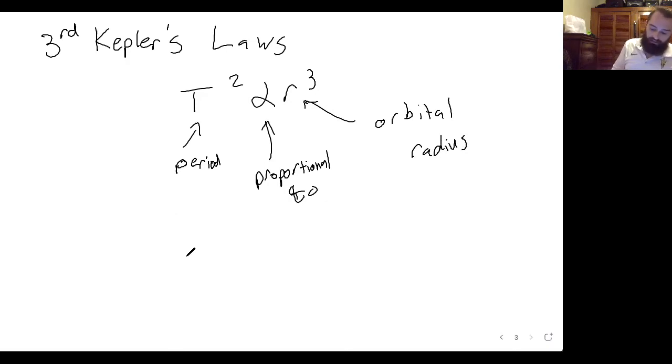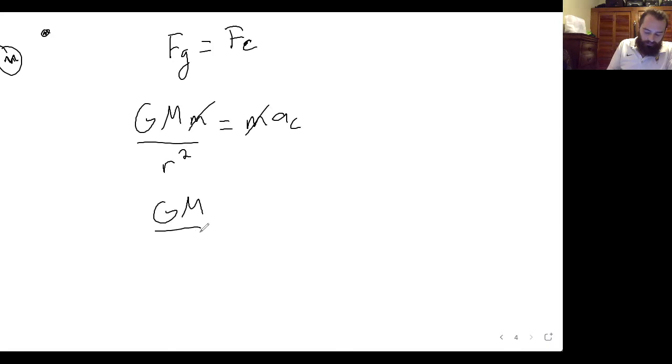So we can derive that just by setting our gravitational force equal to the centripetal force. So the gravitational force we've seen is GMm over r squared. And then the centripetal force is m times a_c. So you see the mass of the planet doesn't factor in.